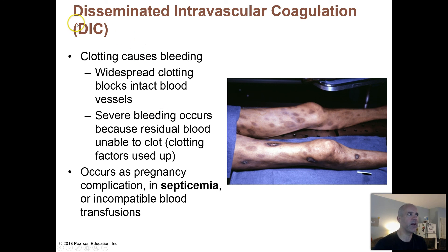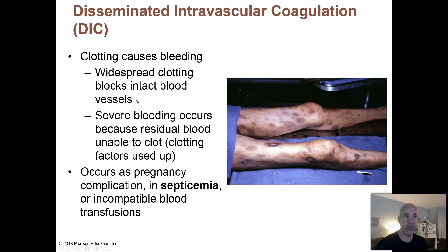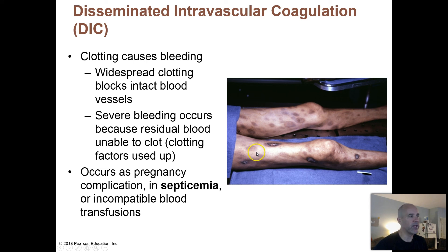What about that third type of disorder — disseminated intravascular coagulation? This is both an unwanted clotting and an unwanted bleeding disorder. You wind up with little microscopic blood clots forming within blood vessels all throughout the body, and this uses up your blood clotting factors. With so many microscopic clots forming, the clotting factors get consumed, so then you can't clot blood when you really need to. You wind up with widespread bruising and petechiae, and this can be very dangerous because internal hemorrhaging can occur that might be fatal.